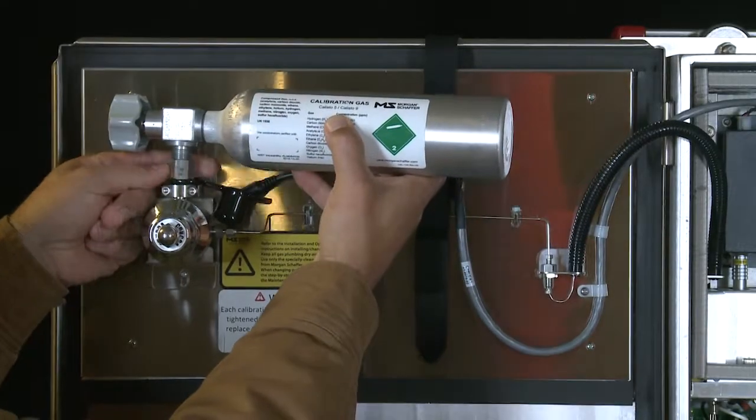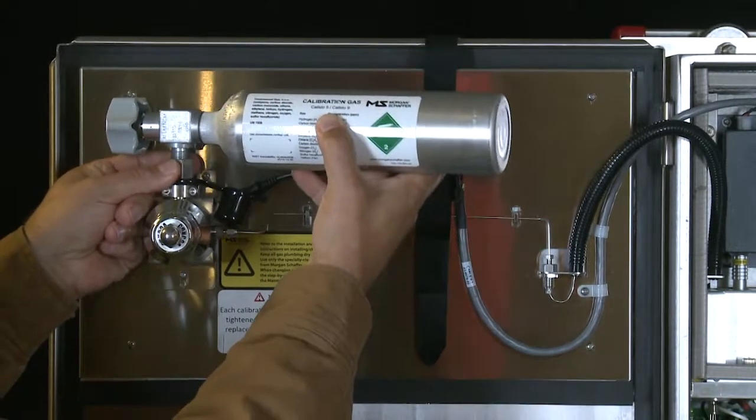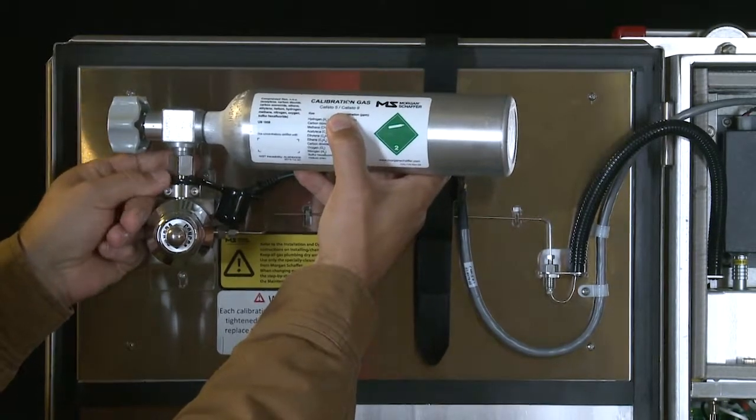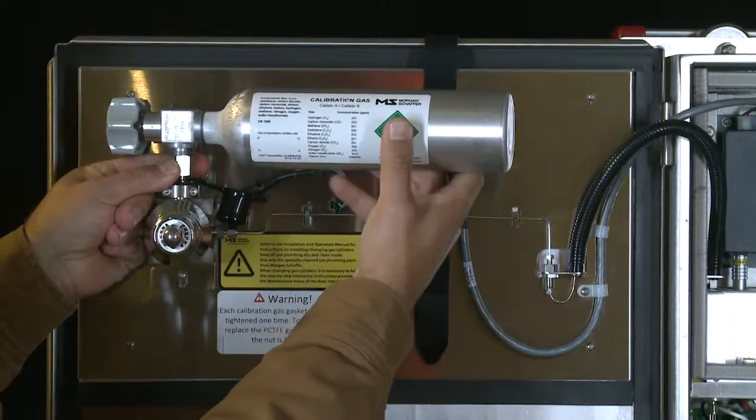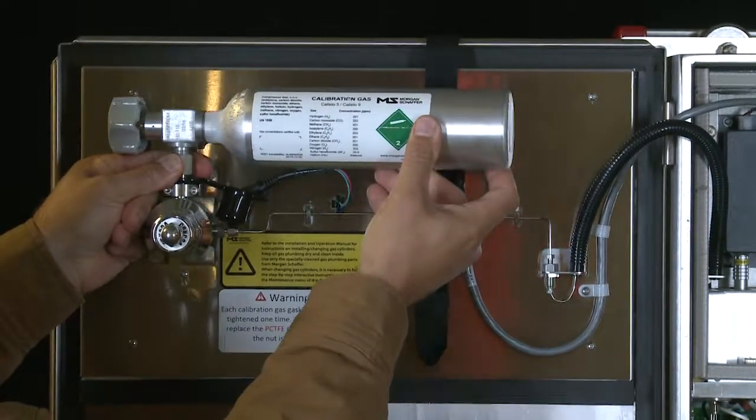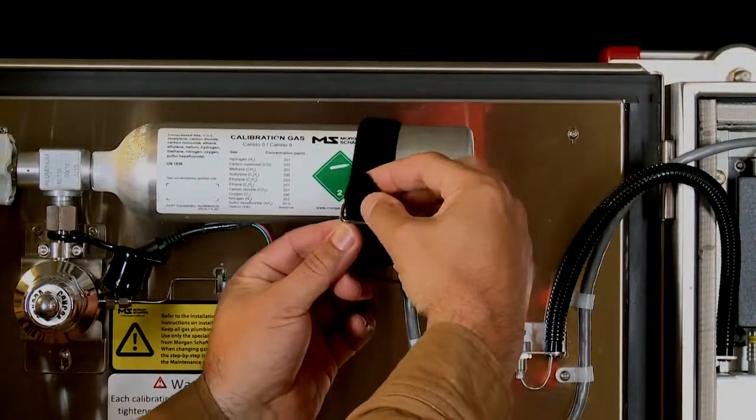Tighten the nut finger-tight onto the new cylinder, ensuring that there is no play between the cylinder and the stem. You may have to move the cylinder slightly to ensure proper finger-tightness. Secure the cylinder using the strap.